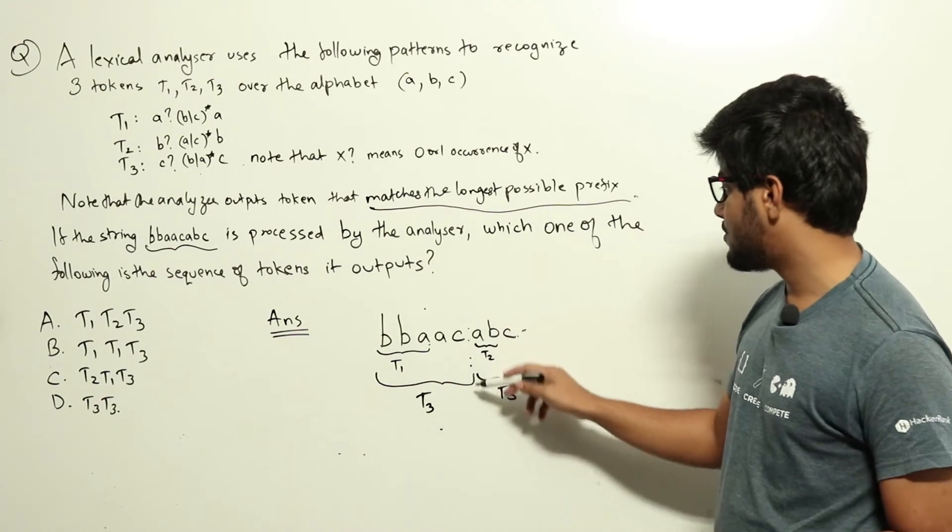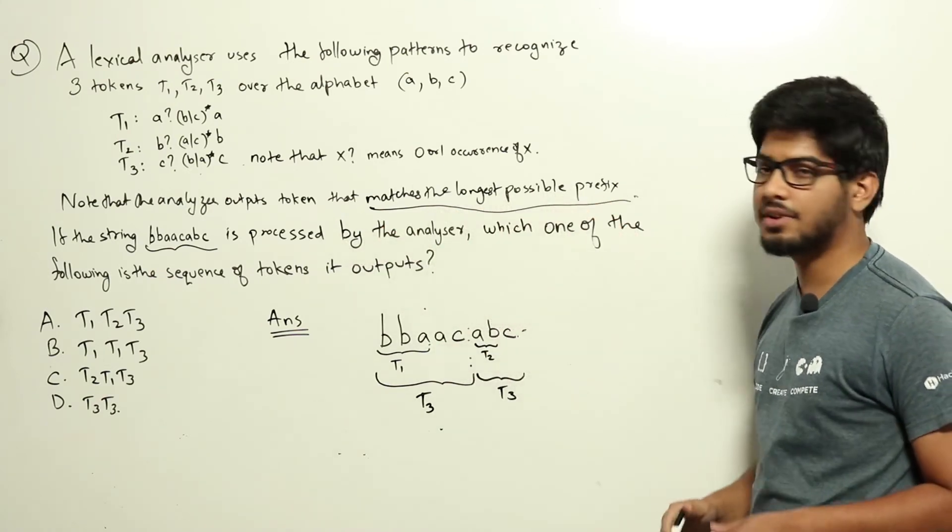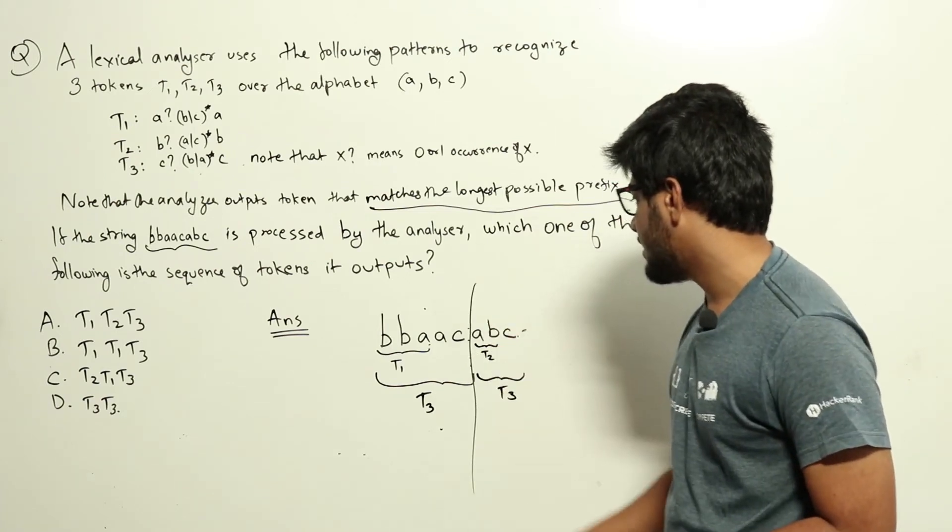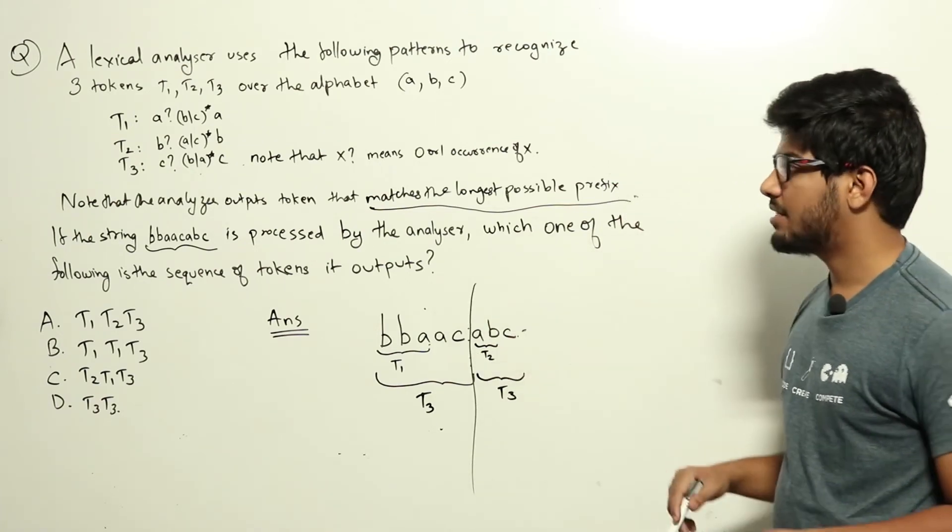So T1 can match up to here, T3 can match up to here, and it clearly says it matches the longest possible prefix, so up to here it will be matched with T3, and the rest we have abc.